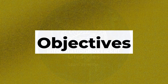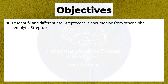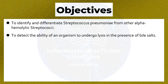Objectives of the Bile Solubility Test: to identify and differentiate Streptococcus pneumoniae from other alpha-hemolytic streptococci, and to detect the ability of an organism to undergo lysis in the presence of bile salts.